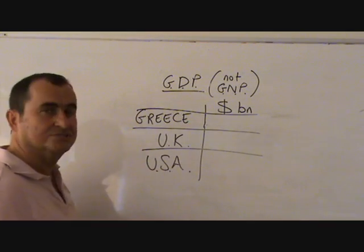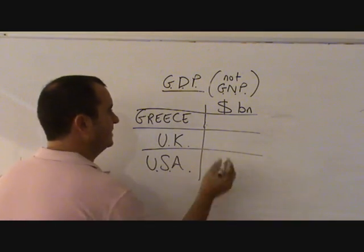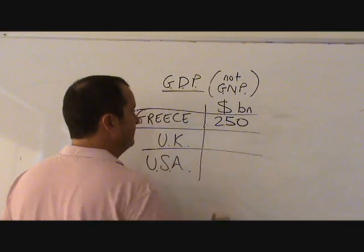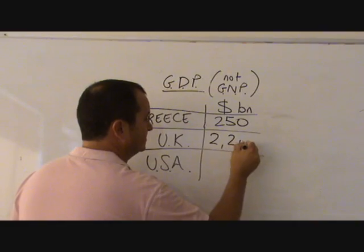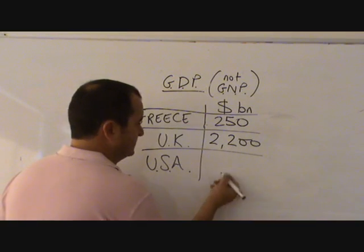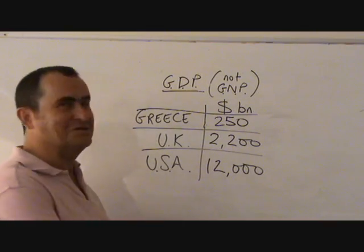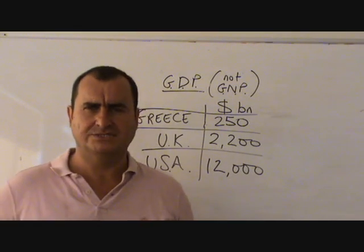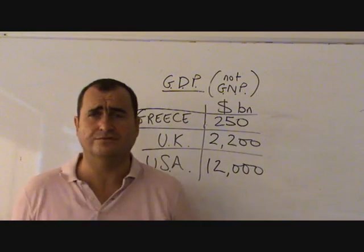Let me give you three countries of different sizes. Greece, which is where I live, has a GDP of something like 250 billion dollars. The UK has roughly a GDP of something like 2,200 billion dollars — or in other words, 2.2 trillion dollars. The USA has something approaching 12,000 billion dollars, 12 trillion dollars. And if you're interested, the entire world has a GDP of something like 37 trillion dollars. The USA is about a third of the world economy.